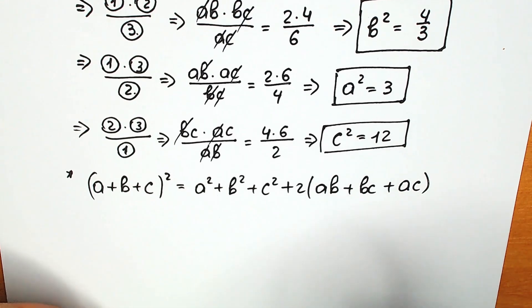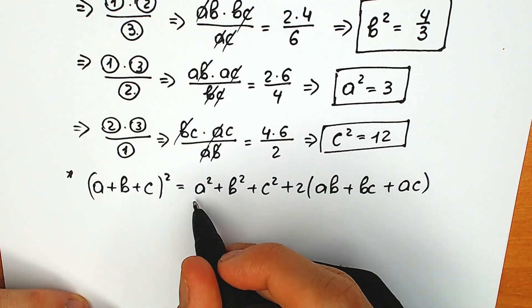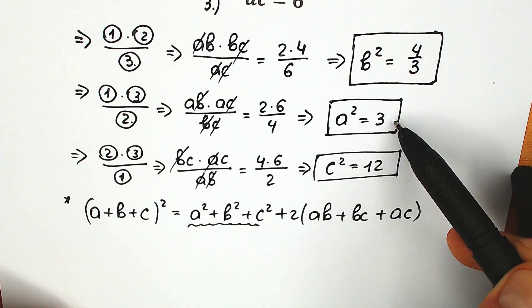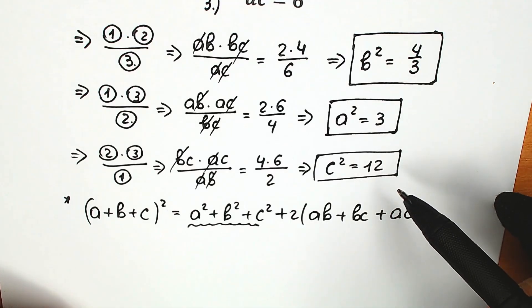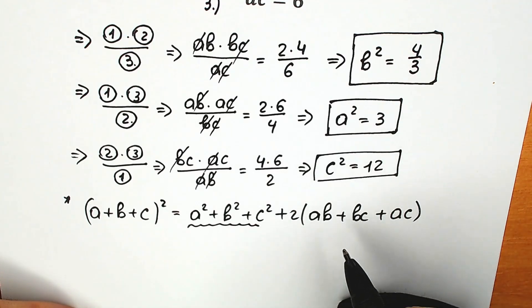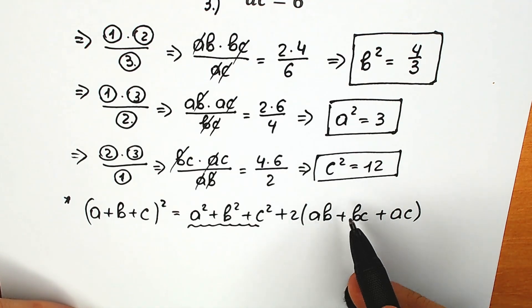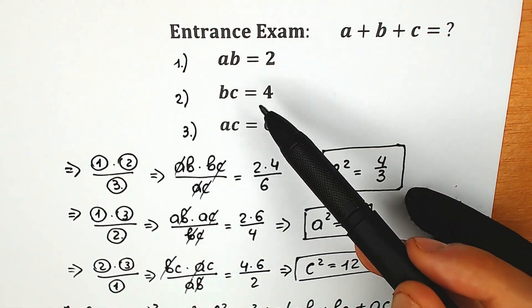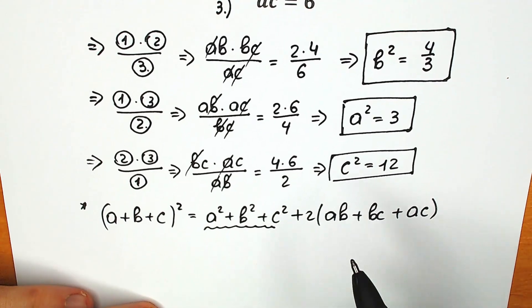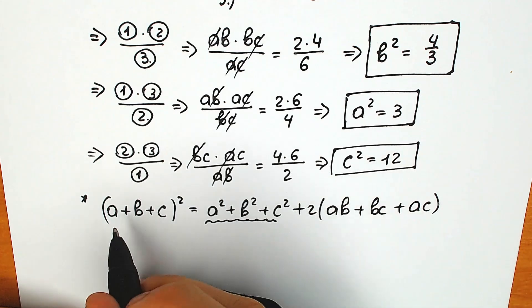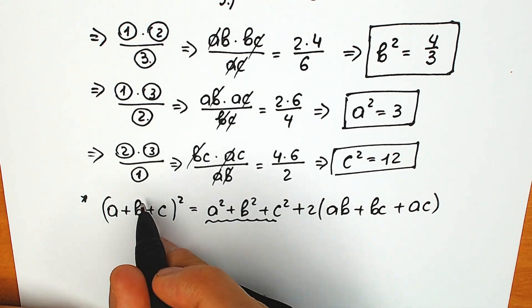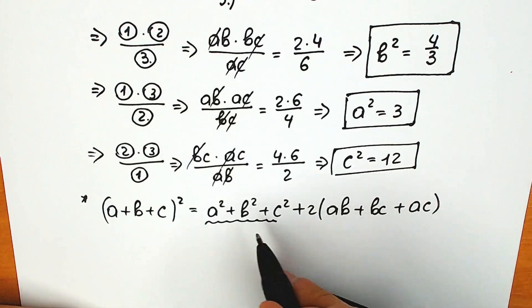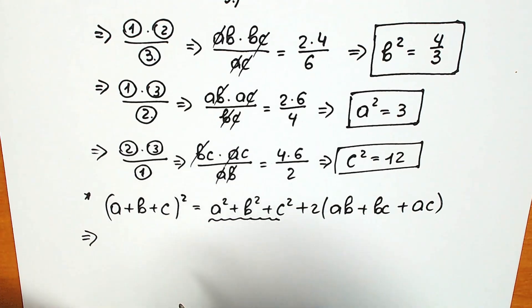This is a classic algebra formula. In our case we have three variables. Let's look at what we know: we know a squared, b squared, and c squared. And in parentheses we have ab plus bc plus ac — we know all of these values too. So we know everything on the right side, and we need to find a plus b plus c. Let's plug in.